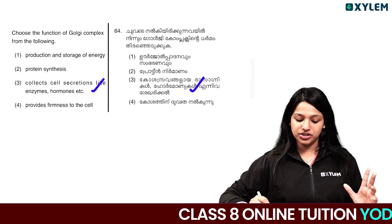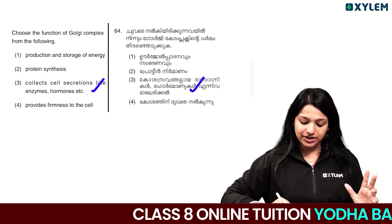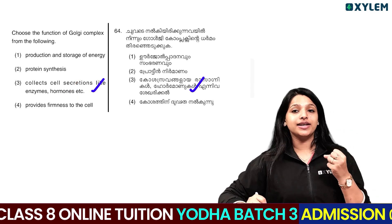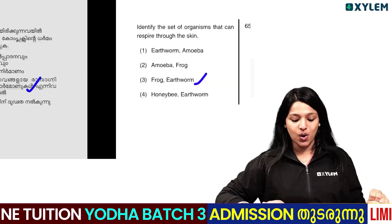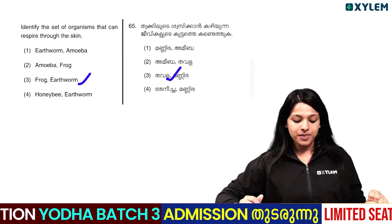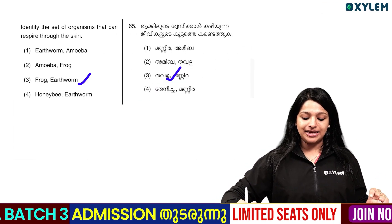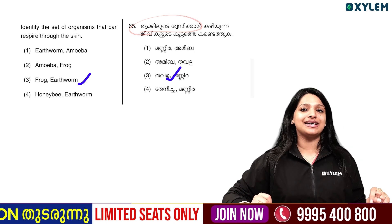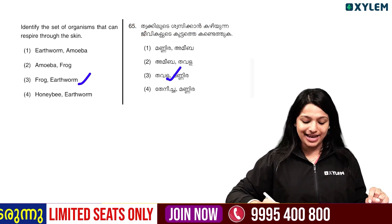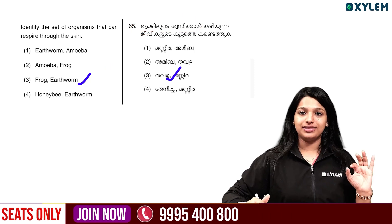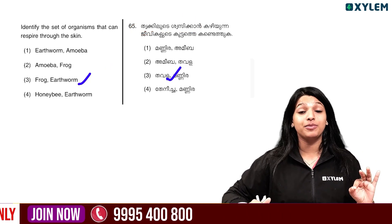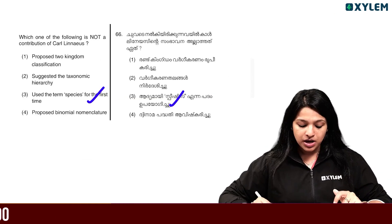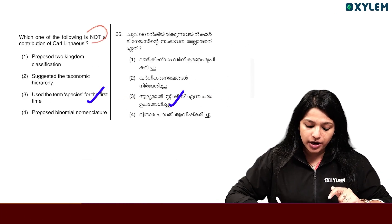Choose the function of the Golgi Complex. The function of the Golgi Complex includes cell secretions, enzymes, and hormones. Identify the set of organisms that can respire through skin — frog and earthworm.